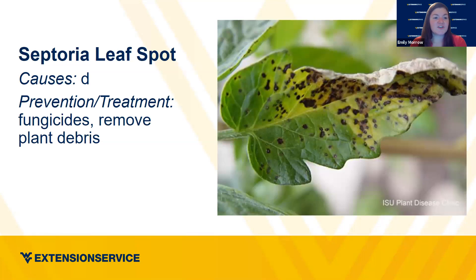Septoria leaf spot is another fungus that needs wet, humid conditions. Fungicides and removing plant debris are the control measures to keep the leaf spot from taking hold. That tomato you see infected there is one example. I don't see this one as much as some of the others, but it's still prevalent.